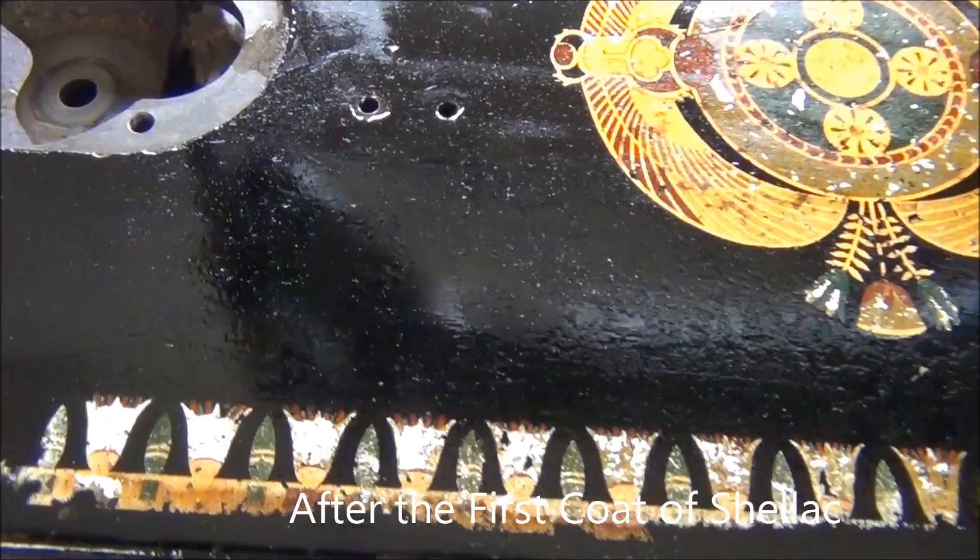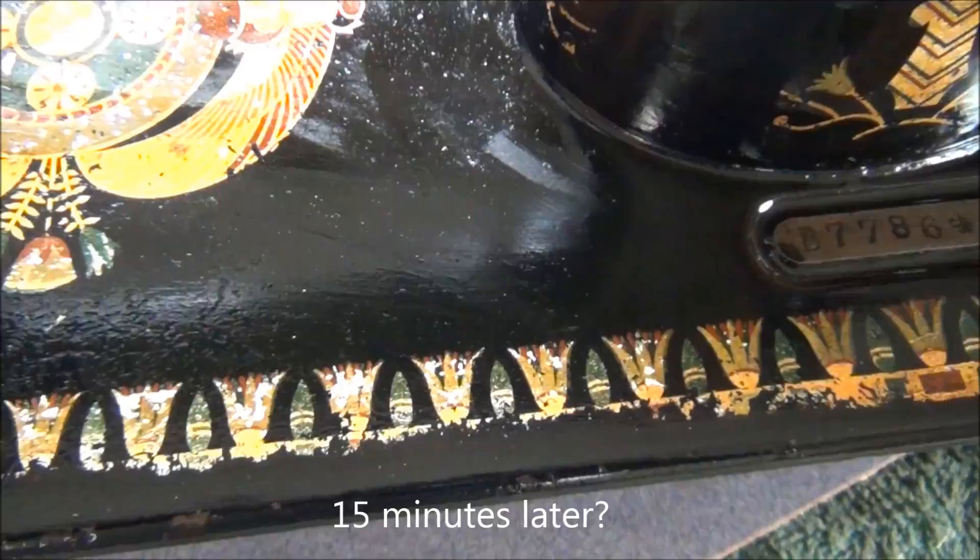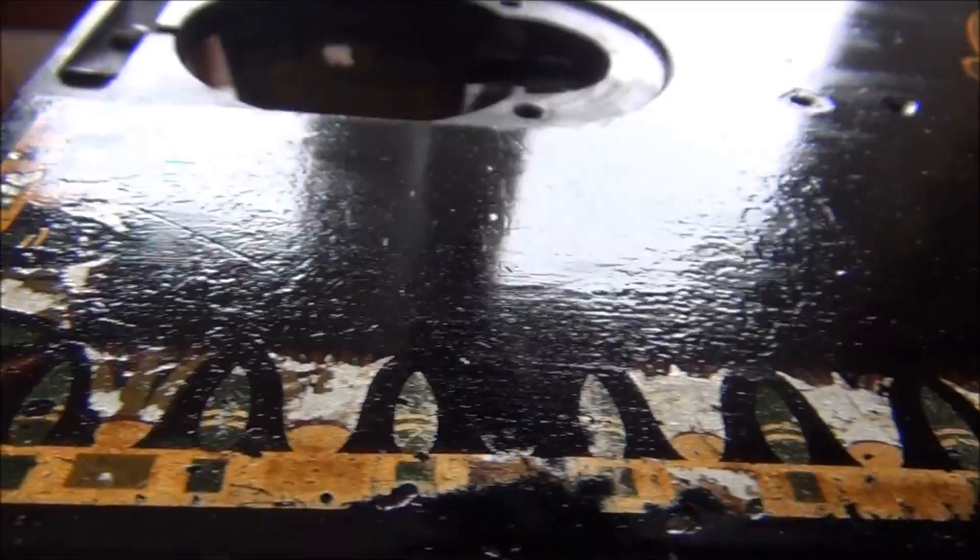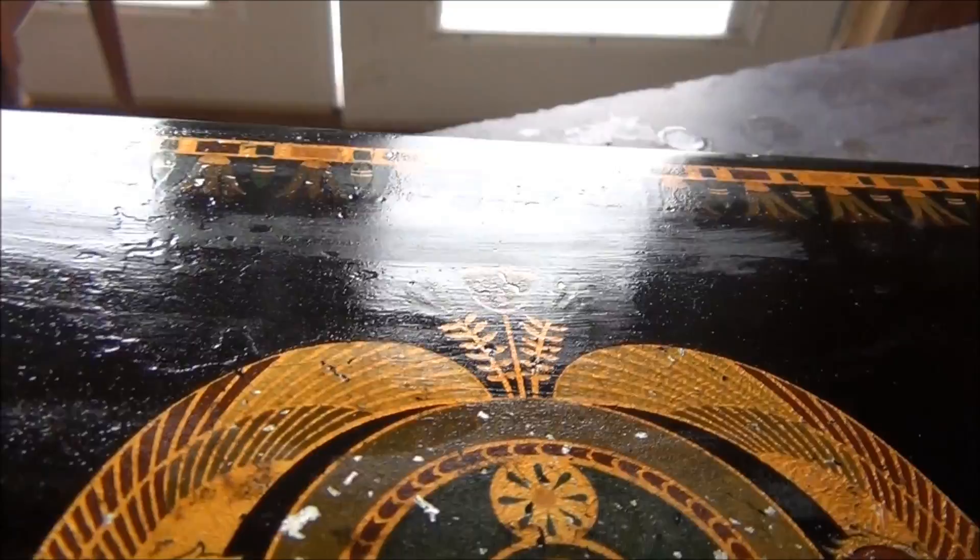Here we are at the end of the first coat. You can see that that pale haziness from the shellac is all gone, it's melted right in. It's still kind of streaky and splotchy. It's nowhere near level. But right now I'm not worried about the level. Right now I just want to build up, get a couple coats on, then we can go from there.